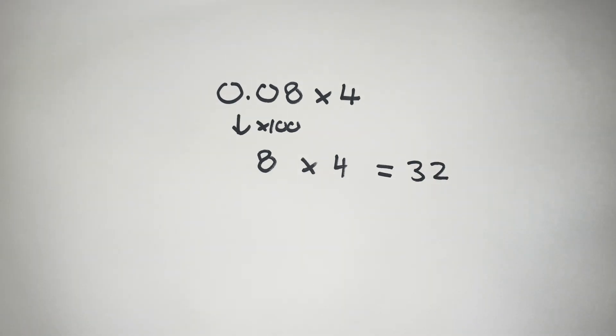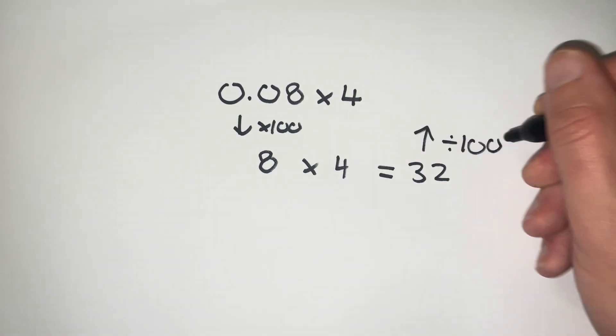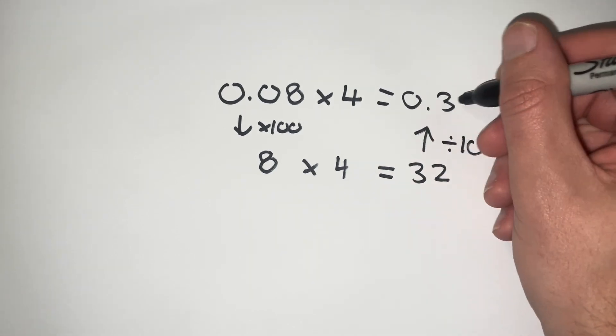But again, this isn't our final answer because we need to undo this multiplying by 100. So instead of dividing back by 10, we're now going to divide back by 100. If we divide by 100, that's going to give us a final answer of 0.32.